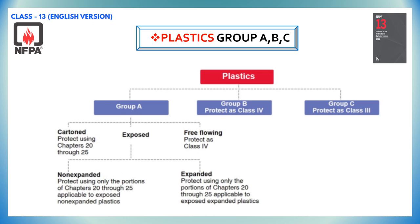Group A plastics are further subdivided into expanded and non-expanded group A plastics, and consist of plastics such as ABS (acrylonitrile butadiene styrene copolymer), FRP (fiberglass reinforced polyester), polycarbonate, PVC, and so on.